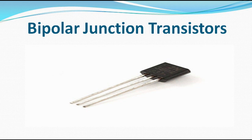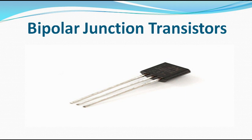Field Effect Transistor has three terminals: gate, drain, and source. Field Effect Transistors are classified into two types as well. Number one is JFET — Junction Field Effect Transistor — and the second one is the Insulated Gate Field Effect Transistor, also called Metal Oxide Semiconductor Field Effect Transistor, abbreviated MOSFET. MOSFET is a voltage-controlled device, while BJT is a current-controlled device.